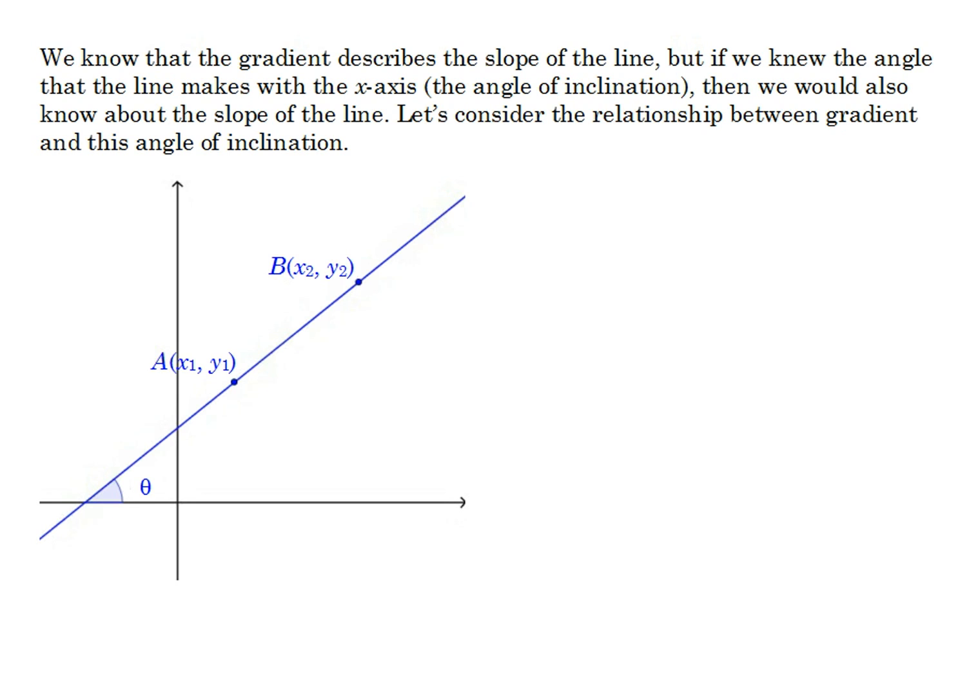We already know about gradient as being rise over run. In this particular example here, we would be taking two points and calculating the rise and the run and using that to work out gradient. Now what I want to also think about in this triangle that I inevitably create when I look at the rise and the run or the change in y and the change in x. I also know that this angle that the line makes with the positive x-axis down here, theta, this is actually the same as this angle here. And that's because this is a horizontal line and so therefore is parallel to the x-axis. And so these two angles that I've just marked as theta are corresponding angles.